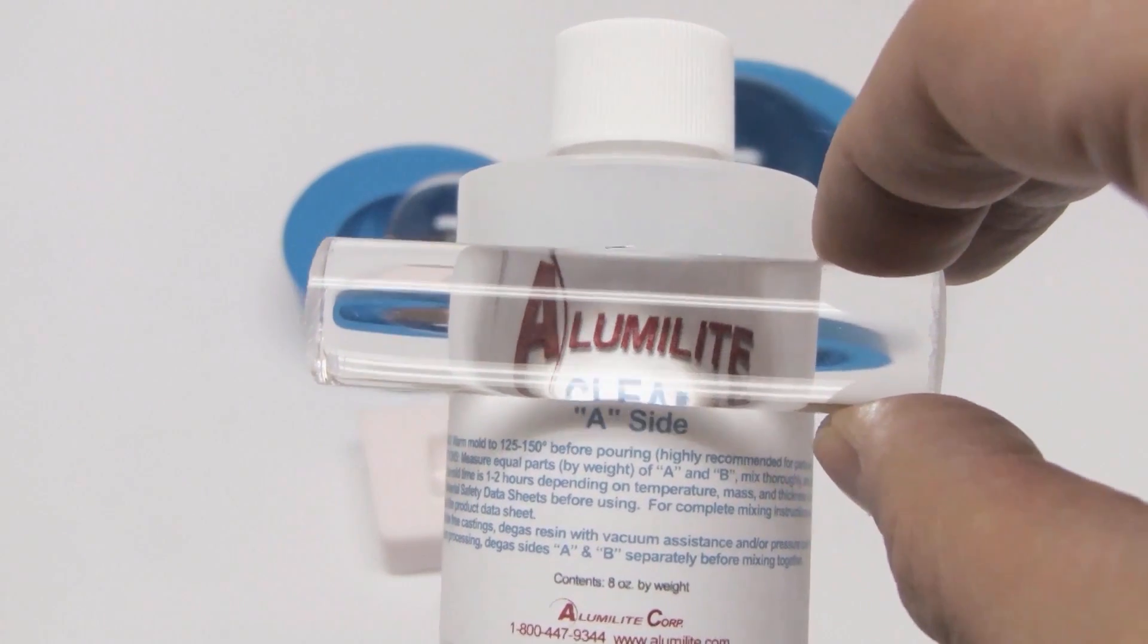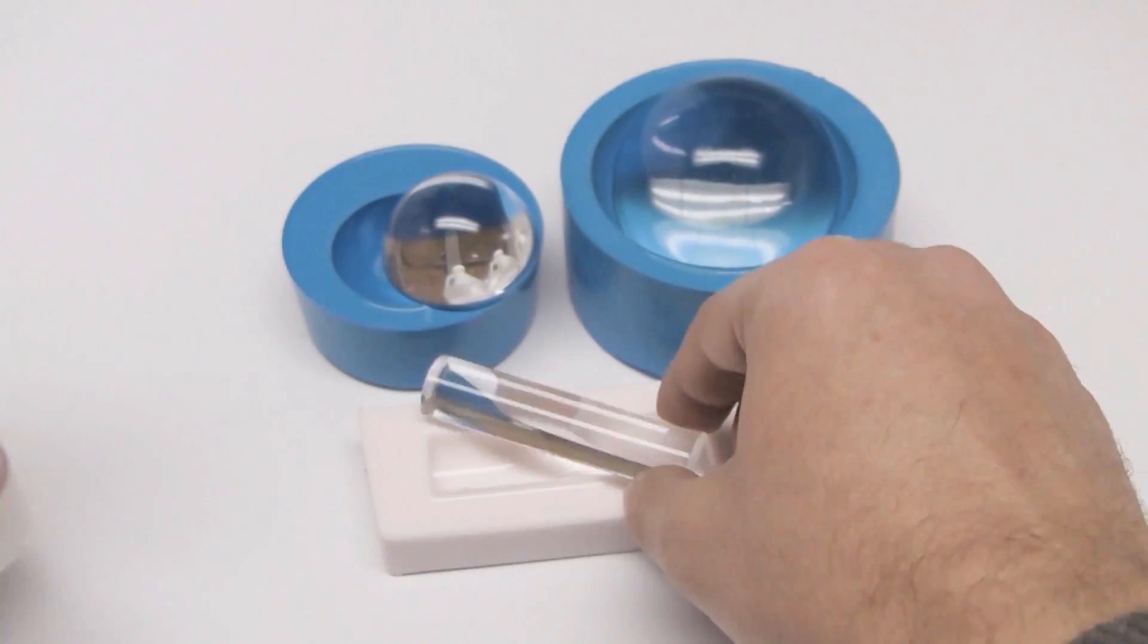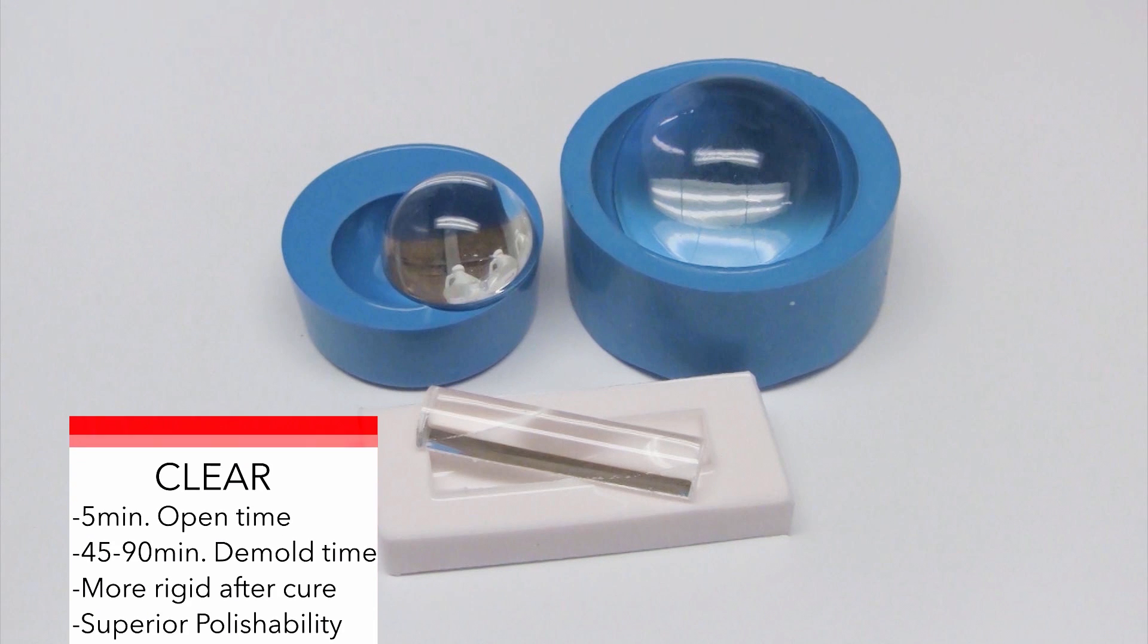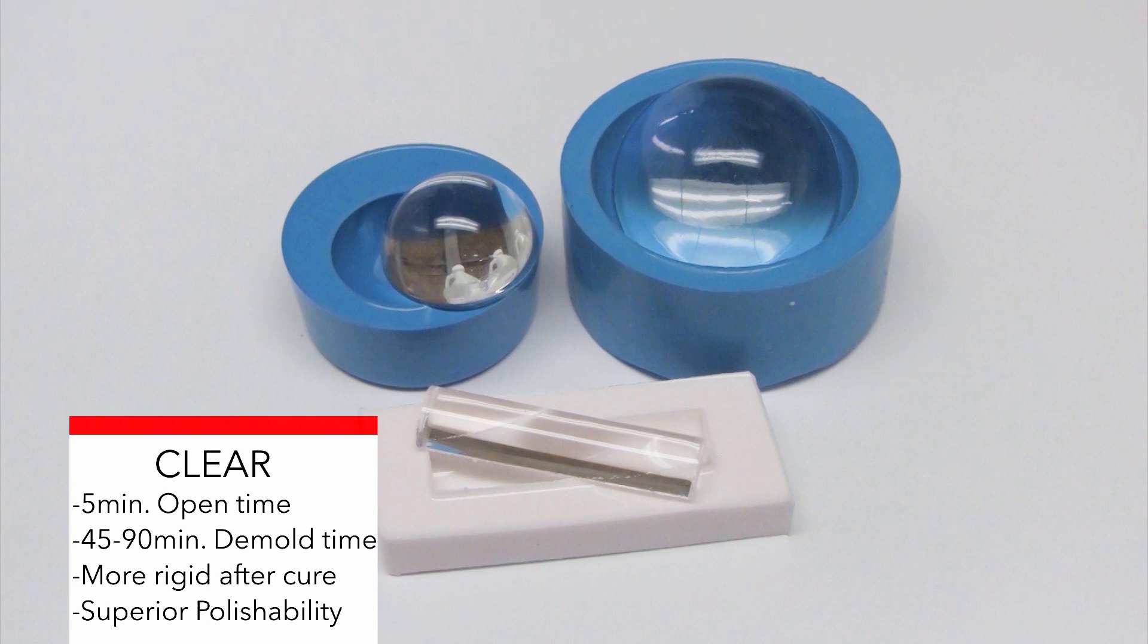While both the Alumilite Clear and Water Clear are really similar in their properties, there are some differences to note. The Alumilite Clear has a five-minute open time, which gives you about a 45 to 90-minute demold time. The Alumilite Clear also cures to a highly rigid surface, therefore making it very suitable for polishing.